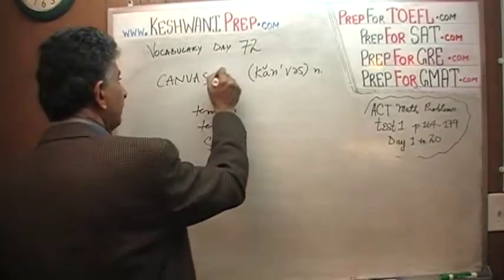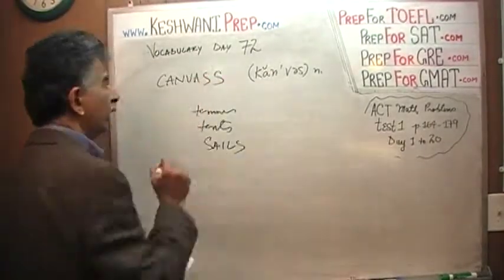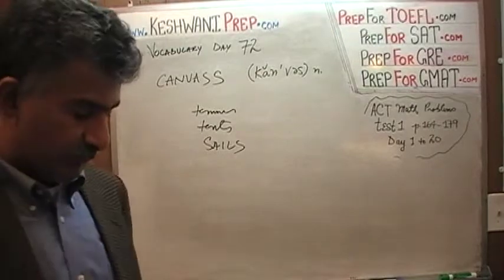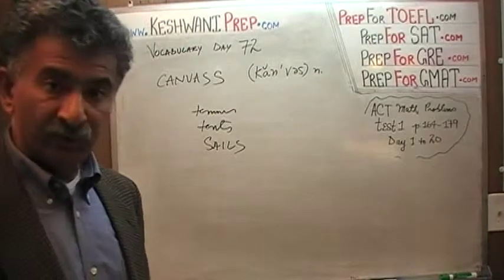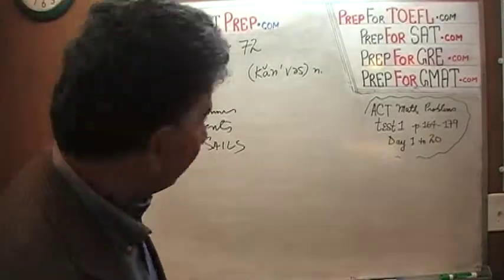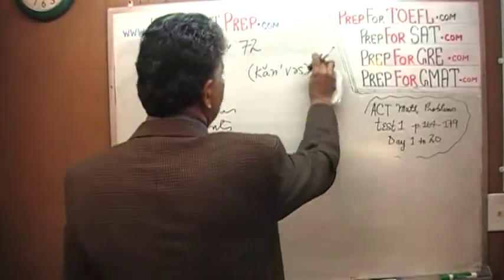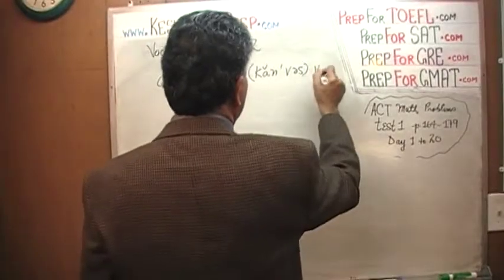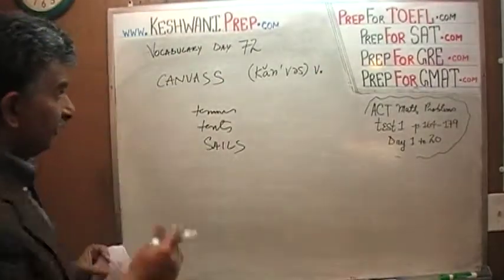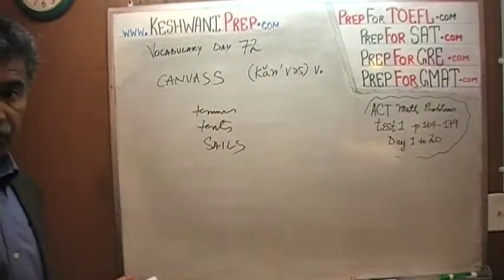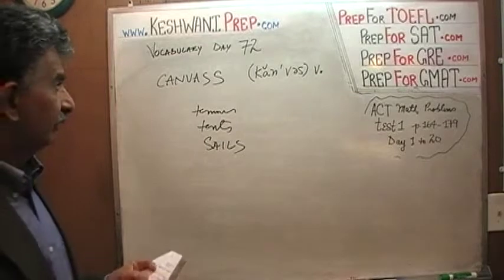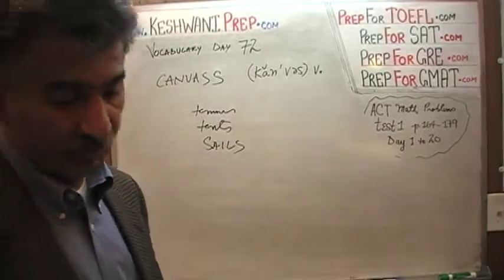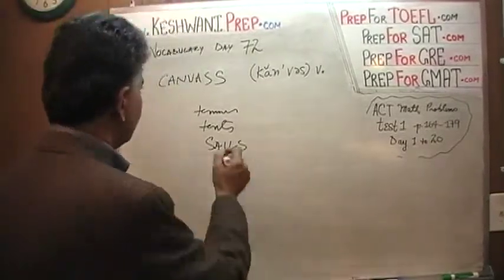The question is: what does the word mean if it has two S's? What does 'canvass' mean? Well, if it has two S's, it's no longer a noun — it is now a verb. But the pronunciation does not change; it's still 'canvas.' What does it mean to canvass? It's a verb now because it has two S's, and as a verb it actually has two meanings.